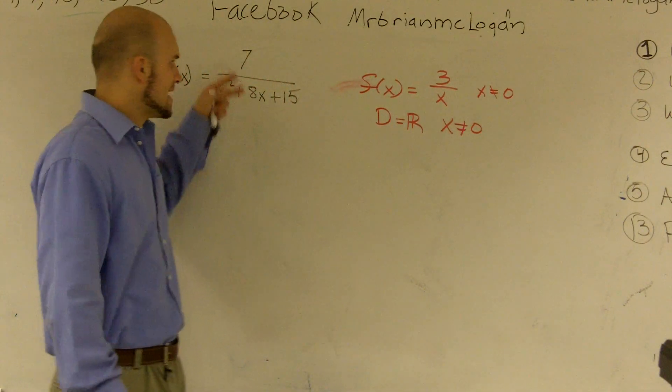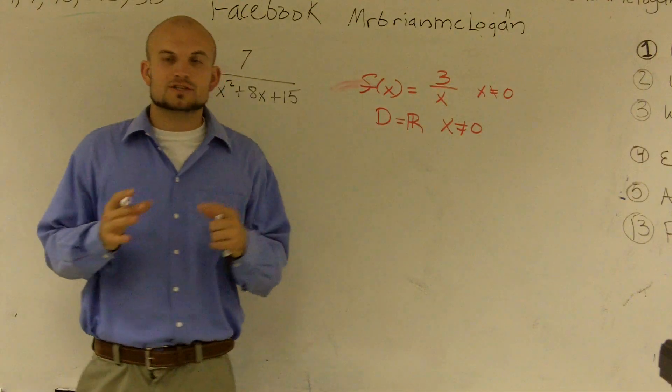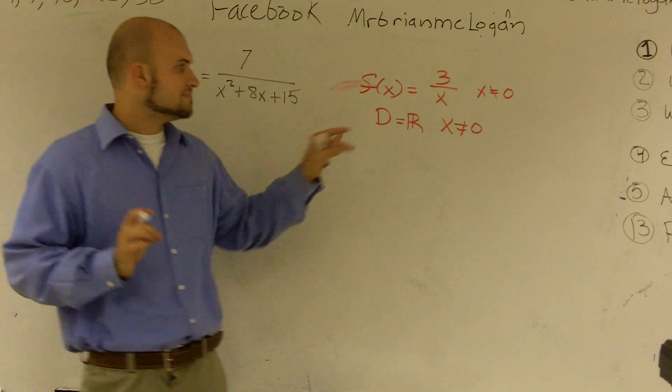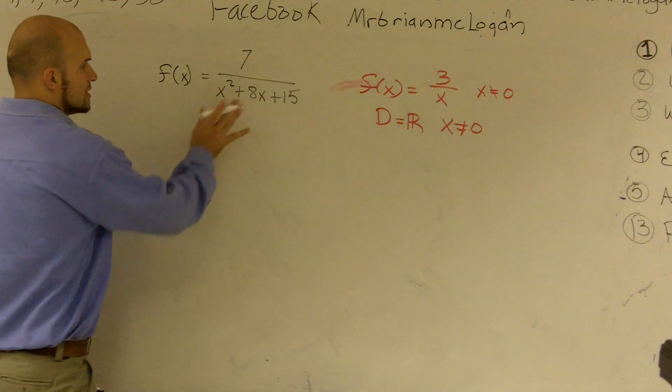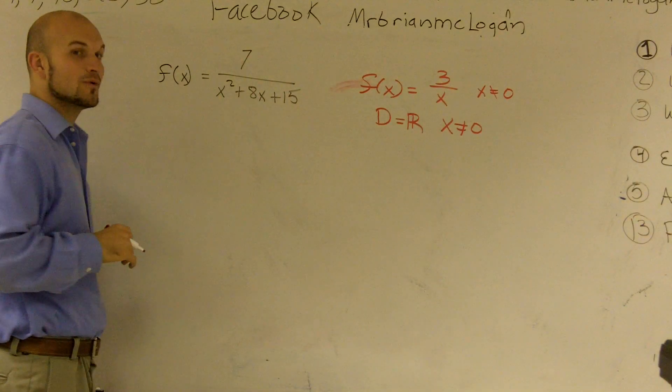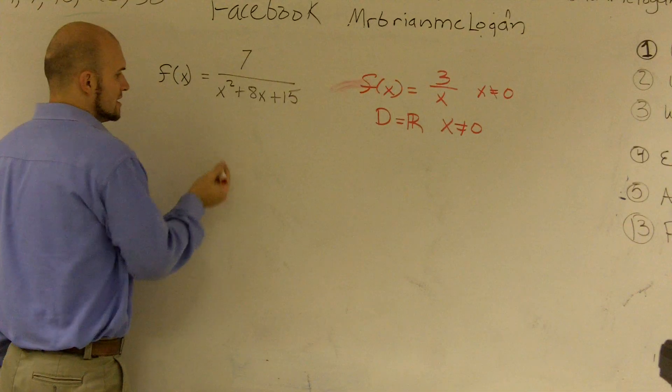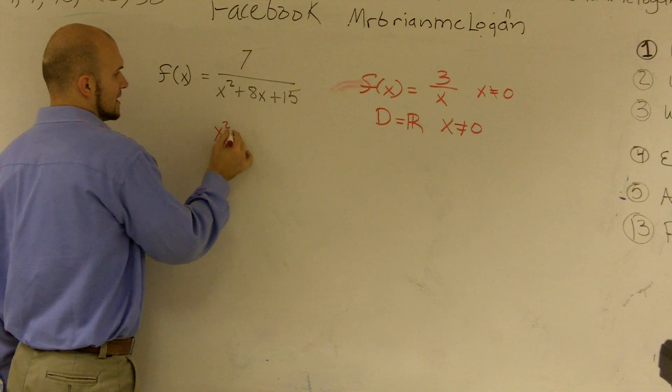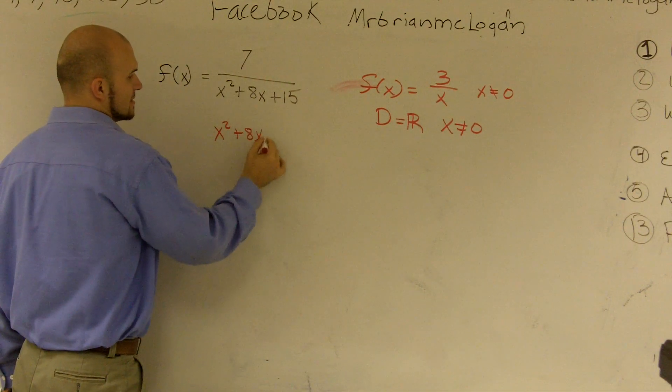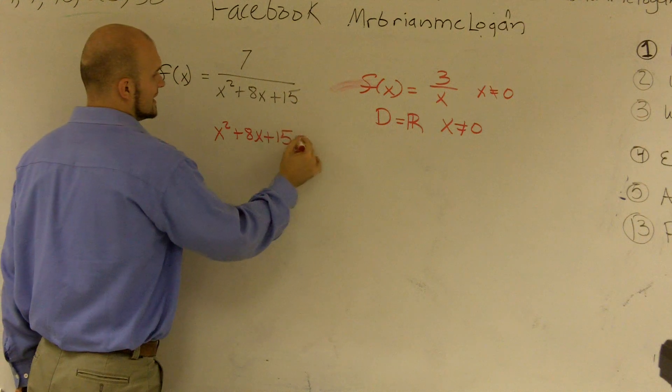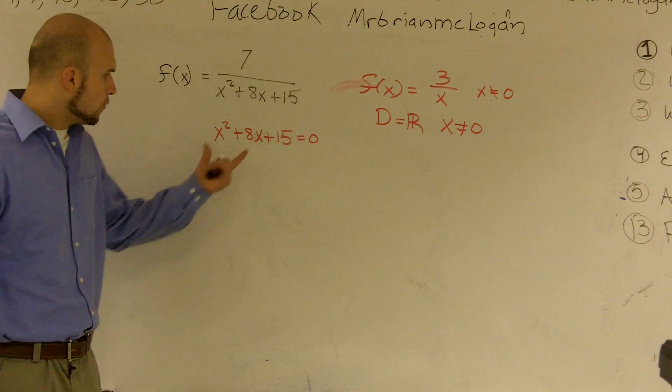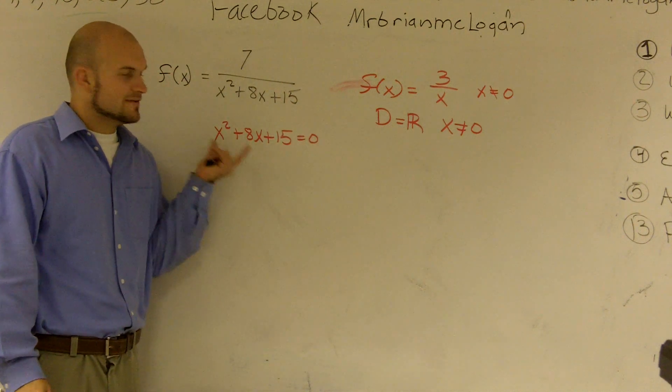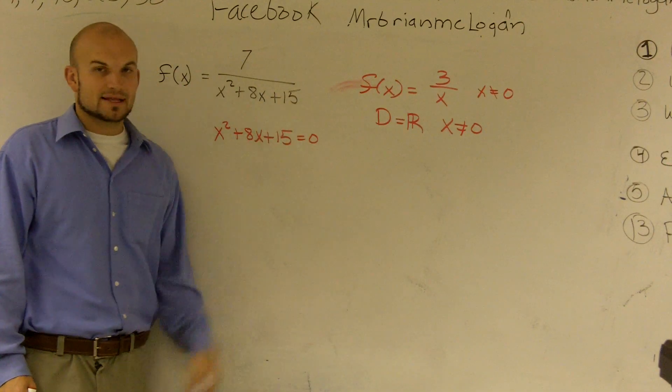So when we're trying to find the domain of a rational function, what we want to do is we want to find out what values make it 0 on the bottom. So here I have a quadratic expression. So I need to figure out x squared plus 8x plus 15 equals 0. I want to figure out what values can I find for x that are going to make this function 0.